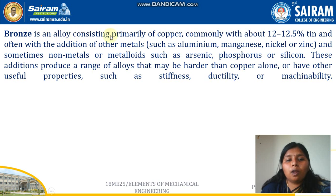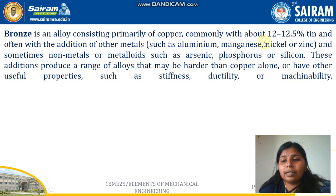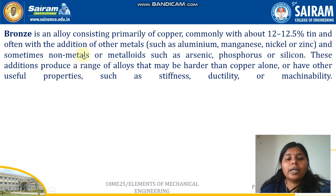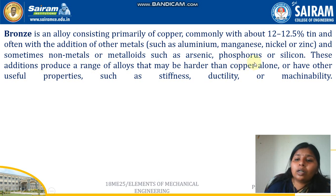The next one is Bronze. Bronze is an alloy consisting of primarily copper, commonly with about 12.5% of tin, and often with an addition of other metals such as aluminum, manganese, nickel or zinc, and sometimes non-metals or metalloids such as arsenic, phosphorus or silicon.